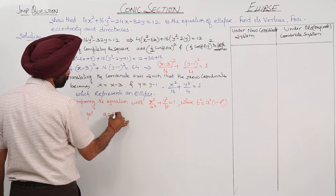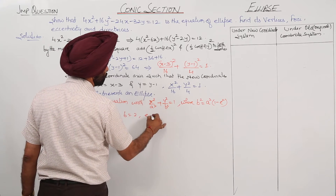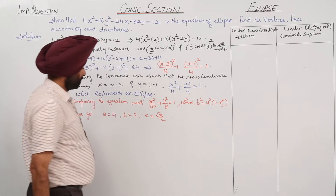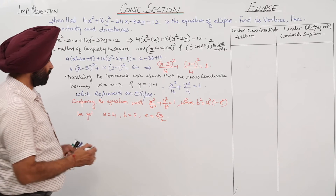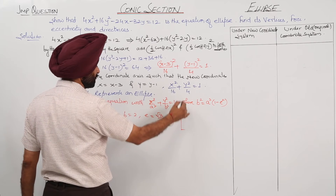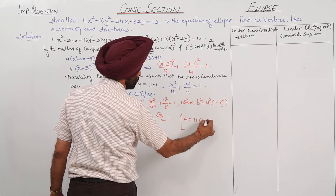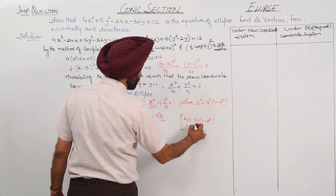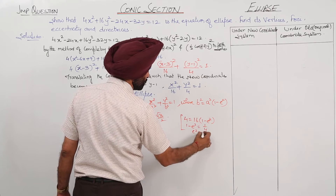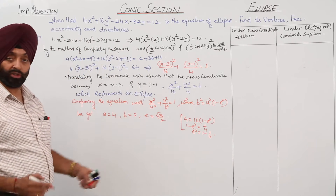We get a = 4, b = 2, and solving for eccentricity: b² = 4, so 4 = 16(1 − e²), giving 1 − e² = 1/4, thus e² = 3/4, and e = √3/2.